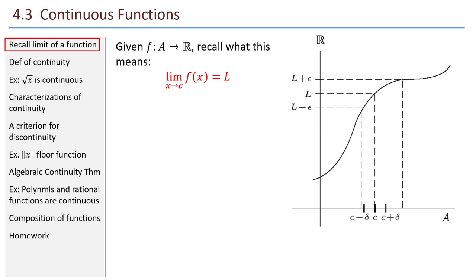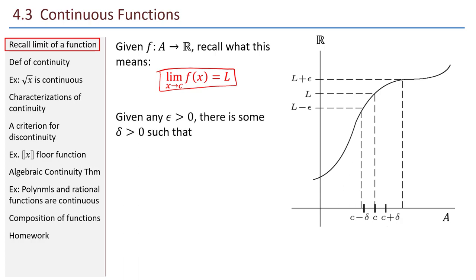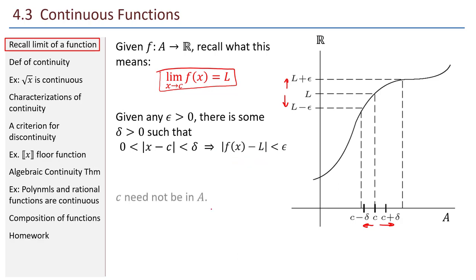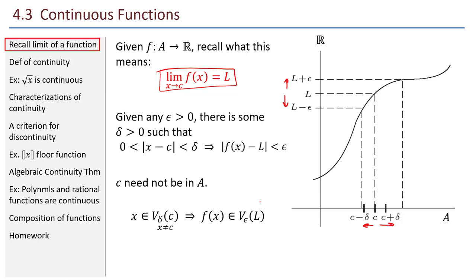Let's recall the limit of a function. The limit as X goes to C of a function F equals L means that given any epsilon greater than 0, there is some delta greater than 0 such that 0 less than the absolute value of X minus C less than delta implies absolute value of F of X minus L is less than epsilon. C need not be in A — the only requirement is that C is a limit point of A. Topologically, X being in the delta neighborhood of C but not equal to C implies F of X is in the epsilon neighborhood of L.